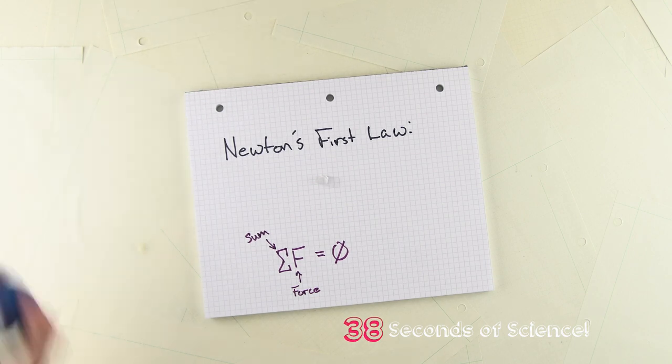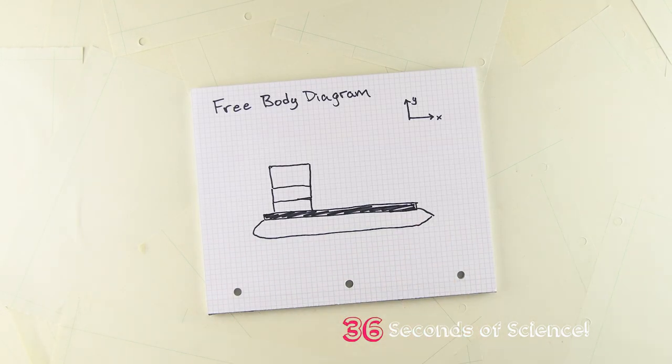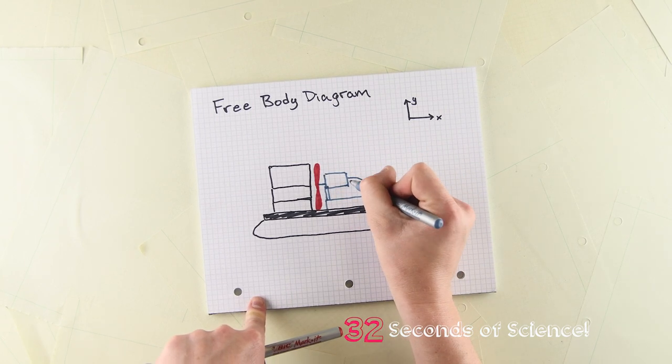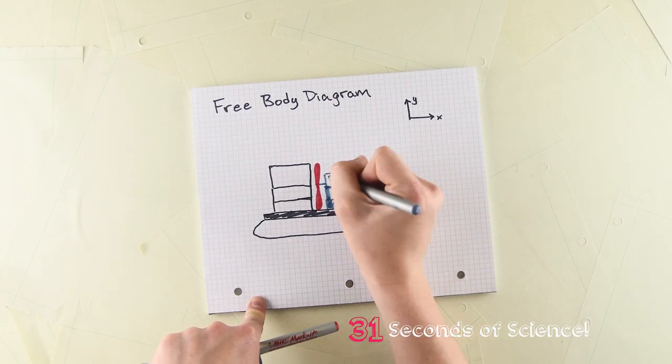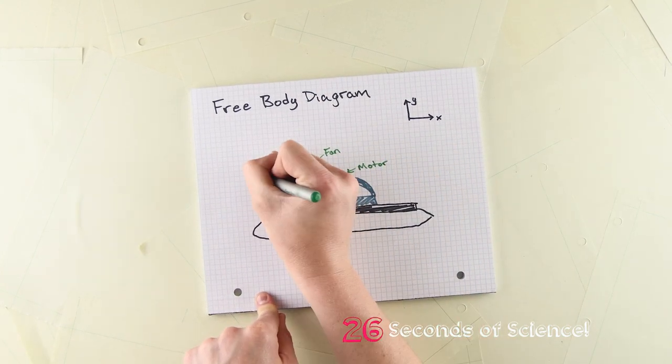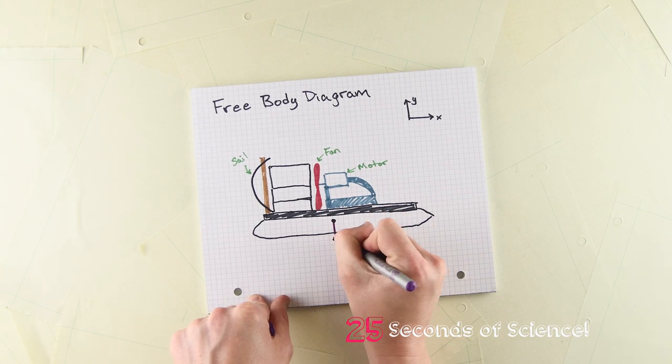Let's look at a more complex system, like this hovercraft. Normally, the fan on this hovercraft will apply a force on the hovercraft, pushing it forward. But if we block the airflow from the fan by adding a sail, the sail has an added force opposing the fan and the hovercraft stays at rest.